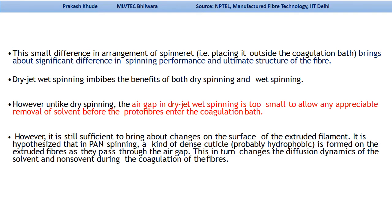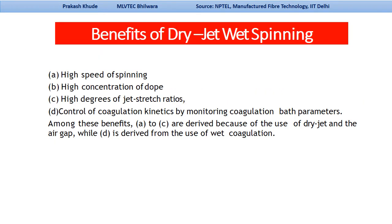This dense cuticle in turn changes the diffusion dynamics of the solvent and non-solvent during coagulation. The basic benefits of dry jet wet spinning are: high-speed spinning, high concentration of the dope, and high degree of jet stretch ratio. These three benefits are derived from the use of the dry jet and the air gap. The fourth benefit — controlling coagulation kinetics by monitoring bath parameters — is derived from the wet coagulation system.